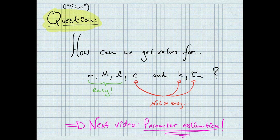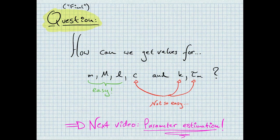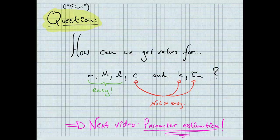That essentially completes the mathematical modelling part. However, the real work only begins now. How do we even get values for all these system parameters? The masses and lengths are easy to acquire. But the friction coefficient C, as well as motor parameters, such as the conversion gain and time constants, will require more work. I encourage you to think about how you'd get values, or bounds, on these parameters and let me know your ideas in the comments. I'll show you my way in the next video. Thanks for watching and I'll see you then.